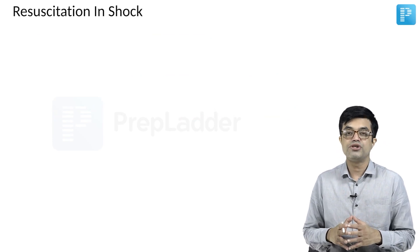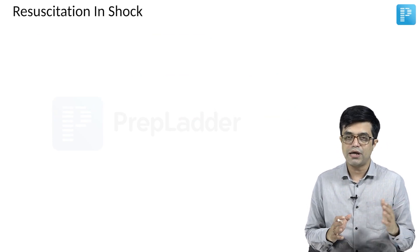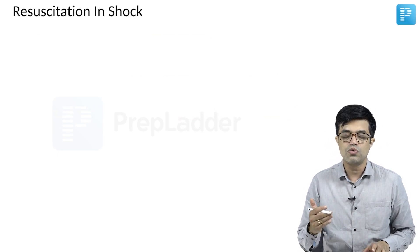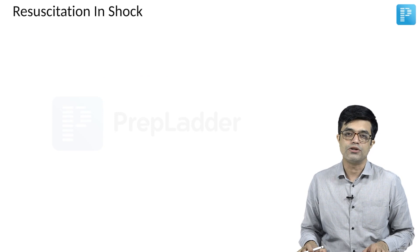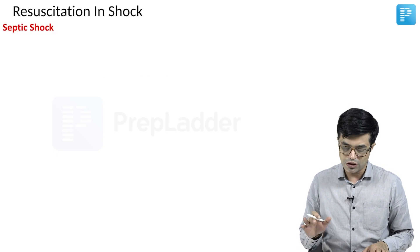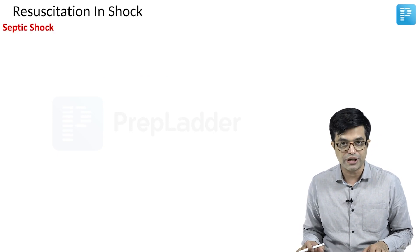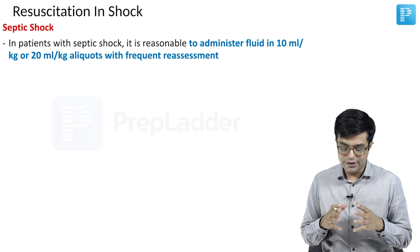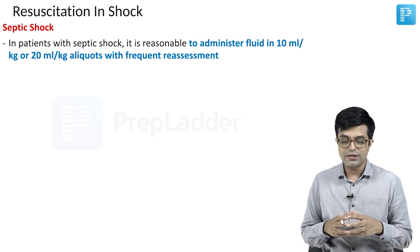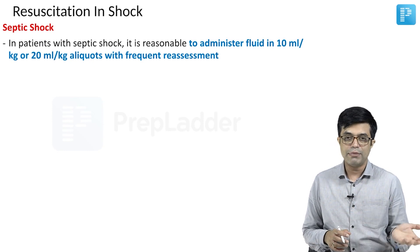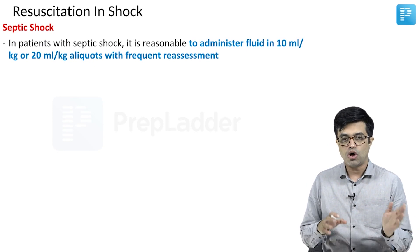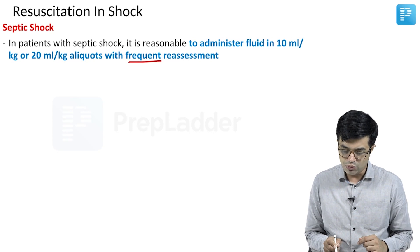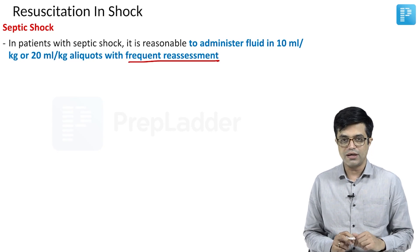Coming to resuscitation in shock. CPR part is done, but how are you going to do resuscitation in case of shock? First, we will talk about septic shock in children. In patients with septic shock, it is reasonable to administer either 10 ml per kg or 20 ml per kg fluid bolus with frequent reassessment.